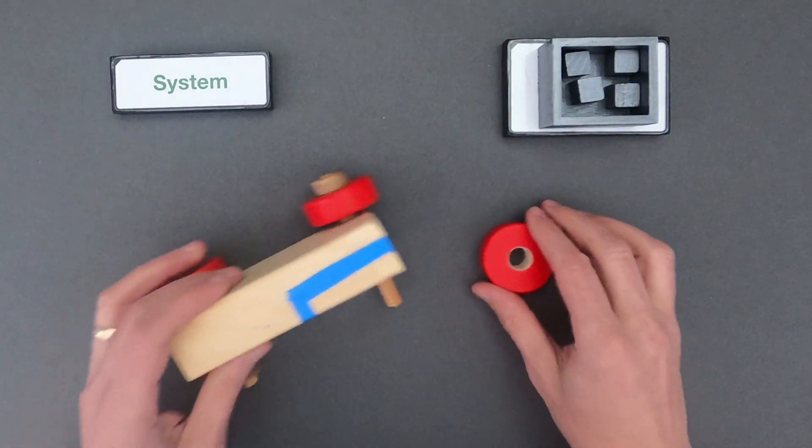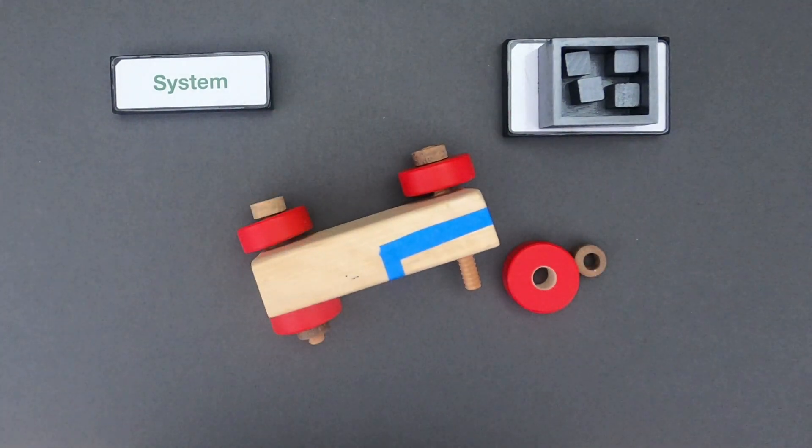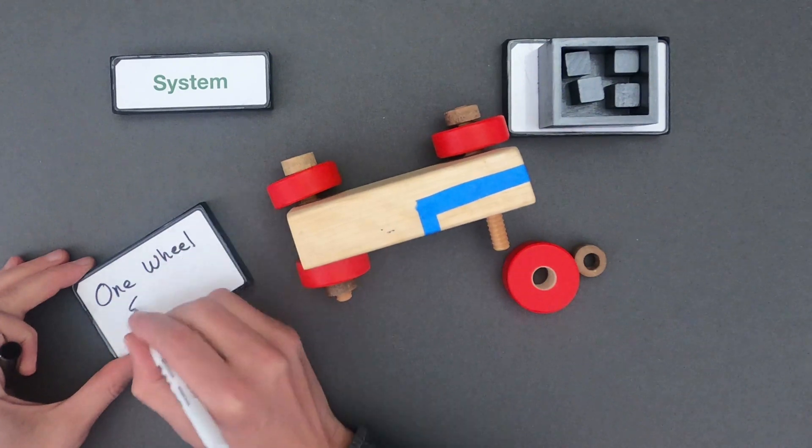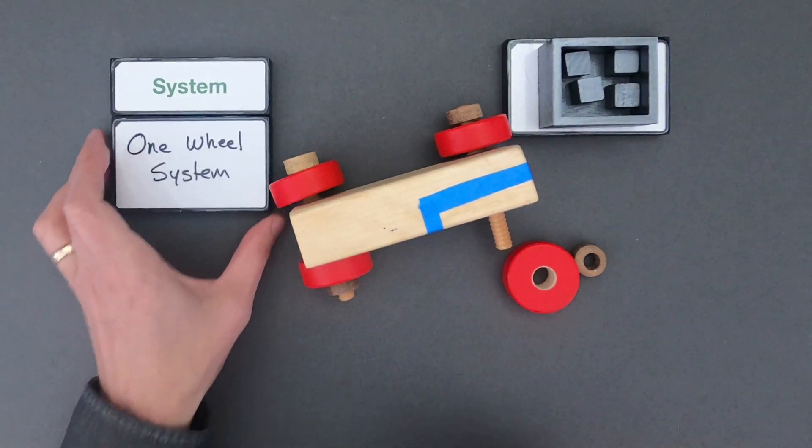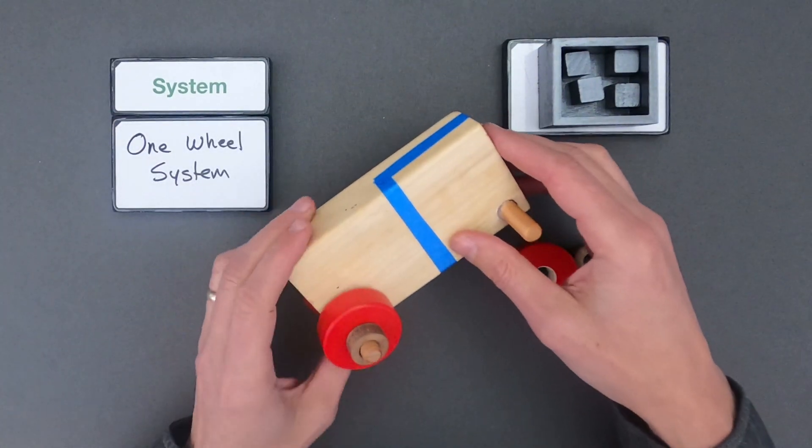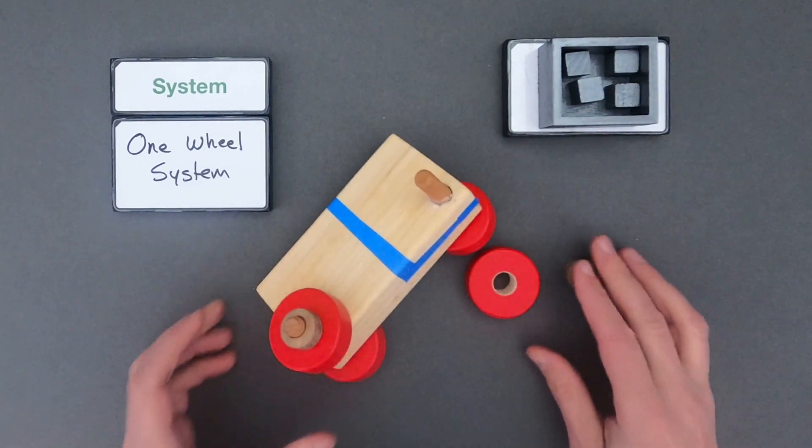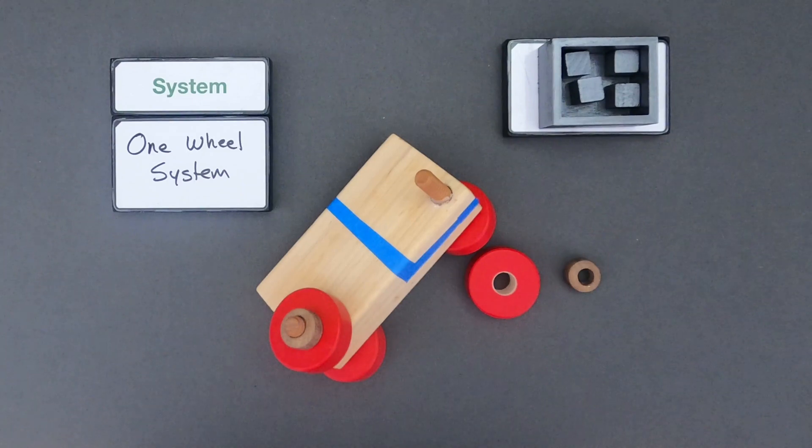And so what I'd like to have you do is create a system model for the following system. Let me define the system. So the system is going to be this one wheel system. It's everything within this blue tape. What I'd like you to do is draw the parts and then label how the parts work together. Unpause the video and then let's see how our thinking compares.